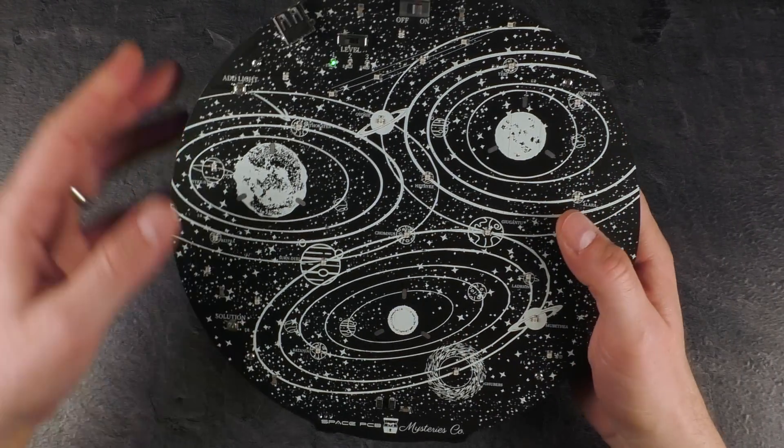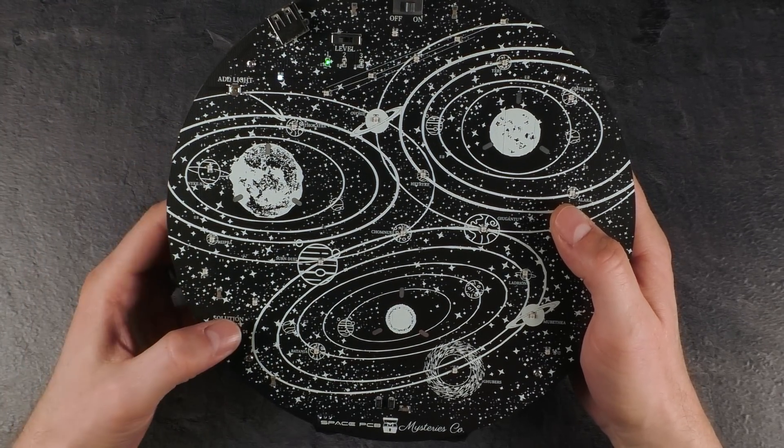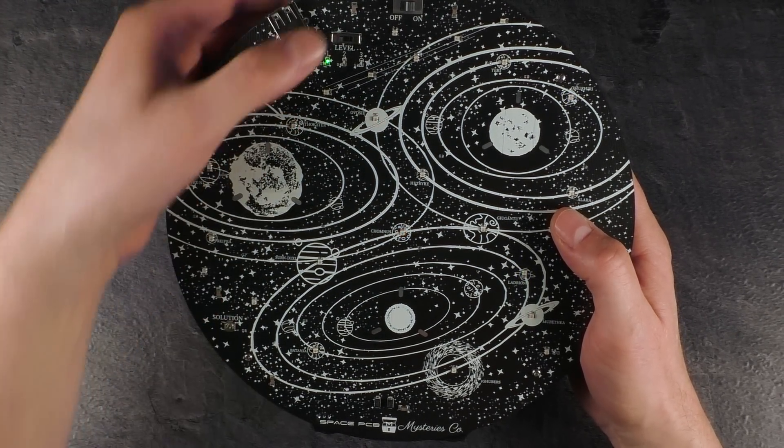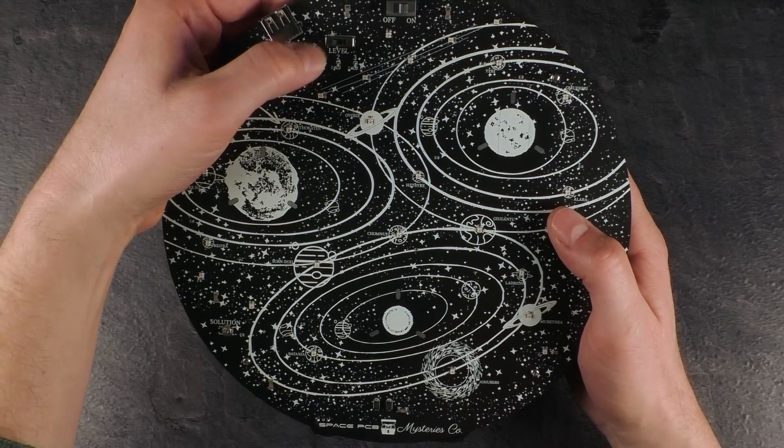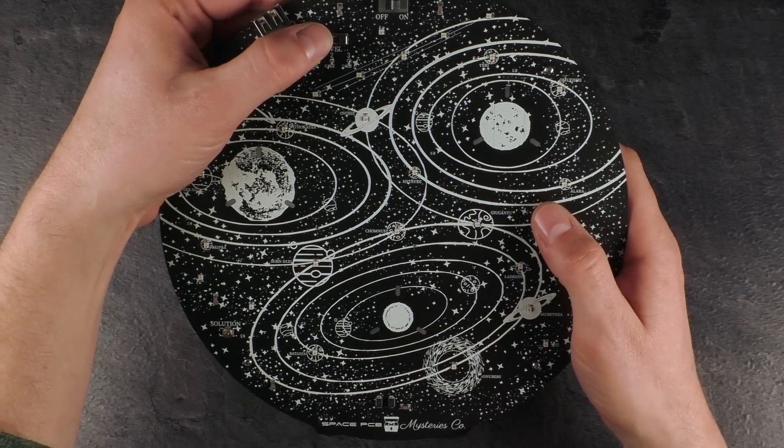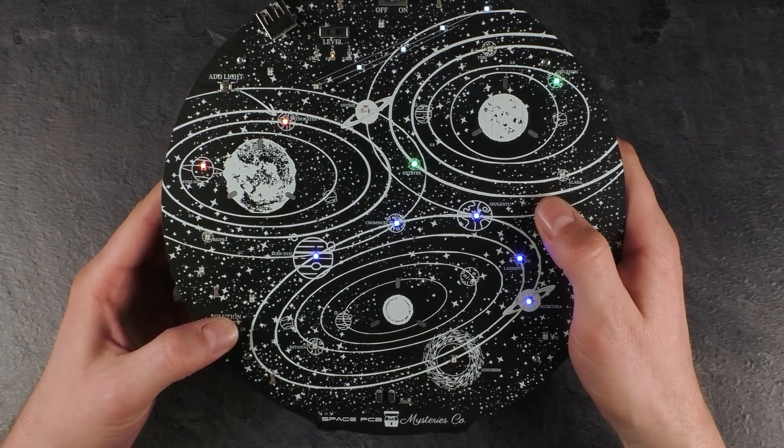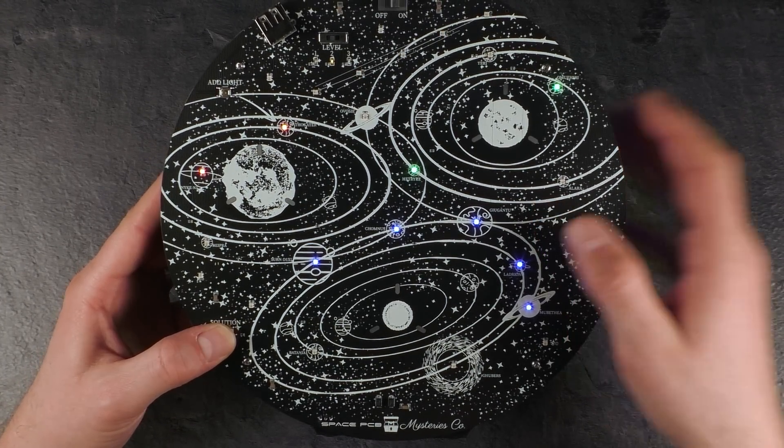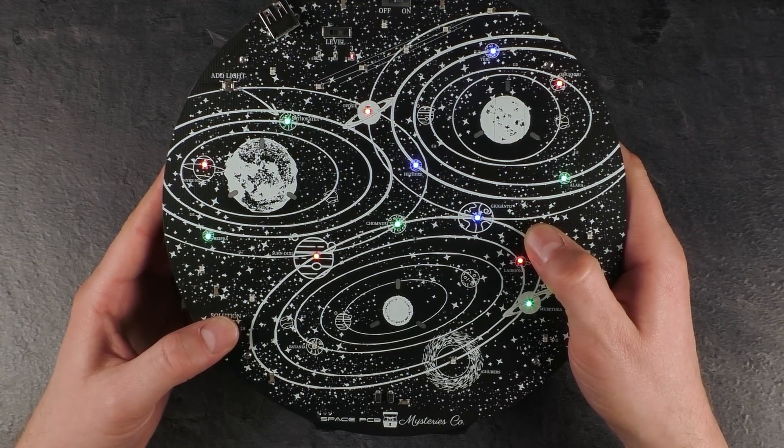What's pretty cool is every time I change the level or switch it on and off, it creates another solution I need to achieve. With level 1, which is the easiest one, there are only few planets lighting up. With level 2 there are already more planets lighting up, and with level 3 an even more complex solution you need to achieve.